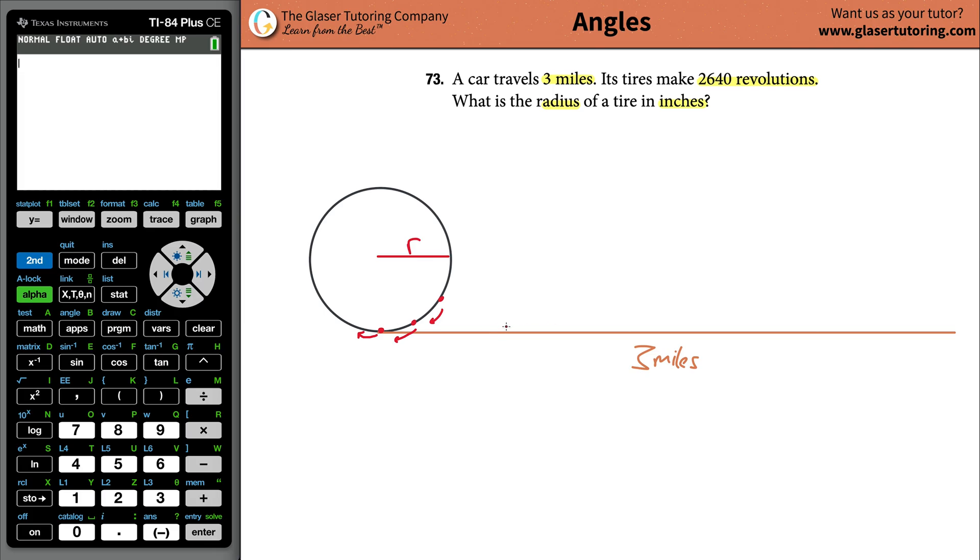In other words, if we can find the circumference of this tire, and we are able to find that circumference from knowing how many revolutions it makes in conjunction with the length it traveled overall, then we can find our radius.